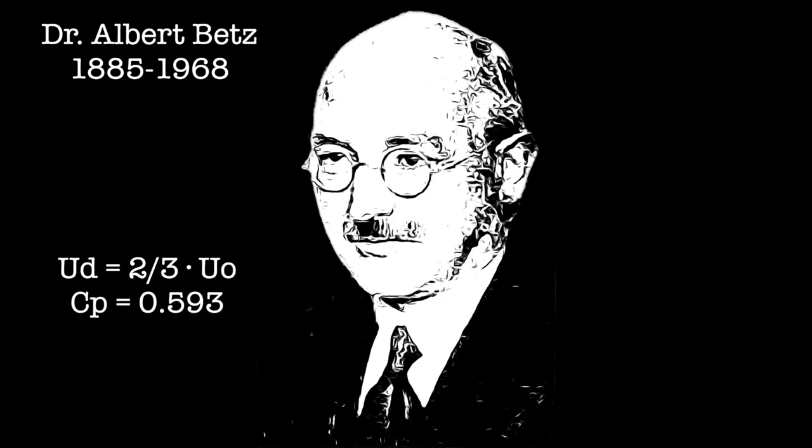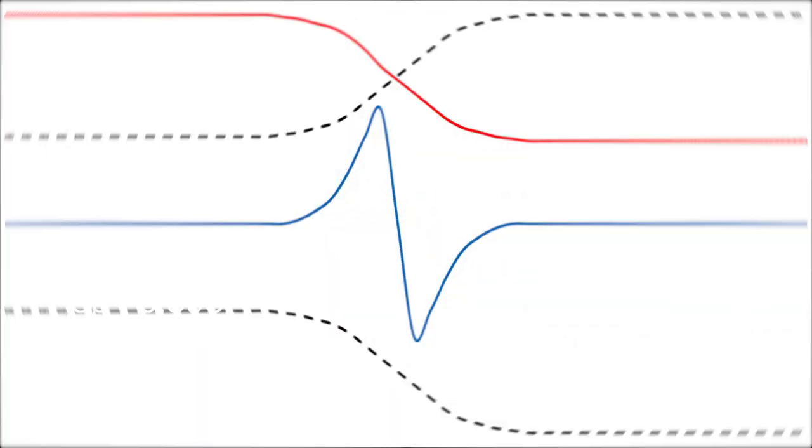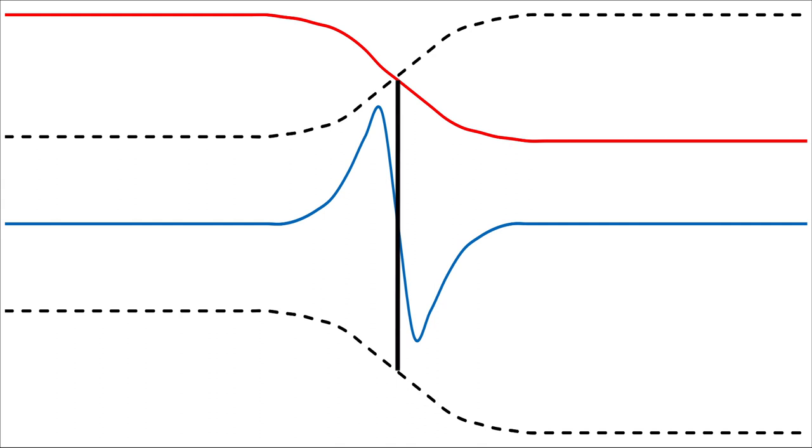He found that there is a wind speed at the device position that maximizes the power coefficient. This limit of the power coefficient is known as Betz's limit. The limit is caused because the stream tube has to expand upstream the device, and so the cross section of the free stream tube is smaller than the device section.